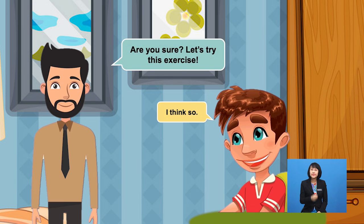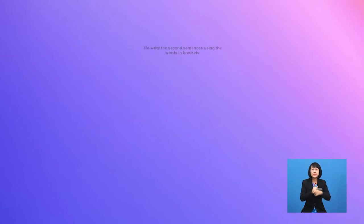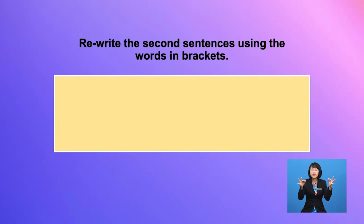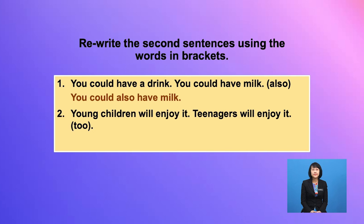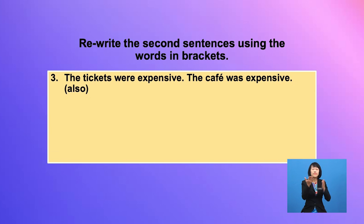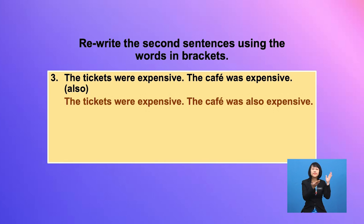Are you sure? Let's try this exercise. Rewrite the second sentences using the words in brackets. 'You could have a drink. You could have milk.' → 'You could also have milk.' 'Young children will enjoy it. Teenagers will enjoy it.' → 'Teenagers will enjoy it too.' 'The tickets were expensive. The cafe was expensive.' → 'The cafe was also expensive.'